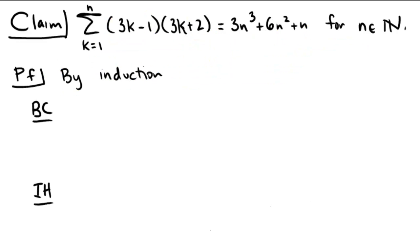Okay, so here's what we want to show: the sum from k equals 1 to n of 3k minus 1 times 3k plus 2 is equal to 3n cubed plus 6n squared plus n for natural numbers. Proceeding by induction, our base case is going to be n equals 1. So if n equals 1, then what do we have on the left-hand side?